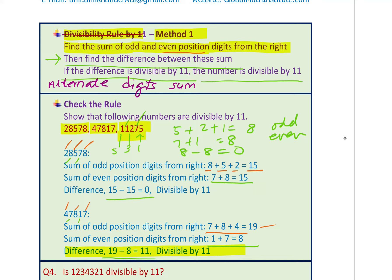Question 4: Is 1234321 divisible by 11? When you apply the rule, you'll find it is divisible. Notice that 1,2,3,4 reads the same forwards and backwards — it is symmetrical. When you see that kind of symmetry in a number, it is always divisible by 11. In that case, you don't even need to find the sum of alternate digits — you can write the answer directly.